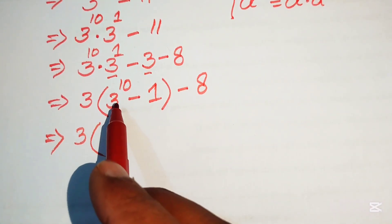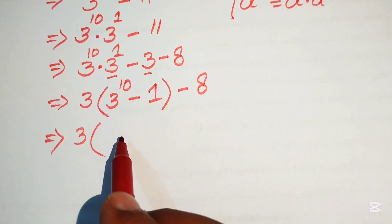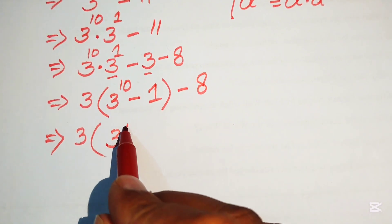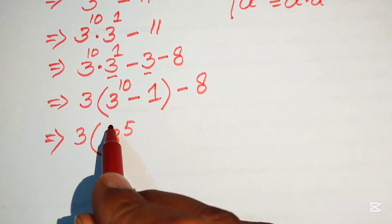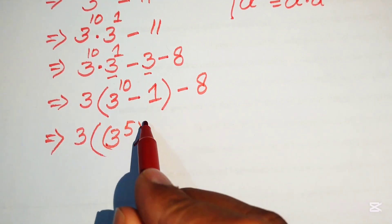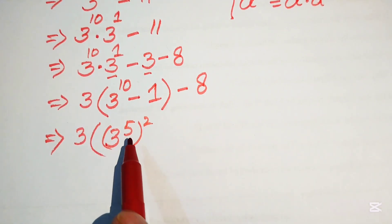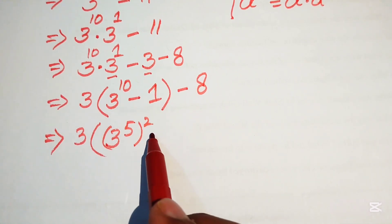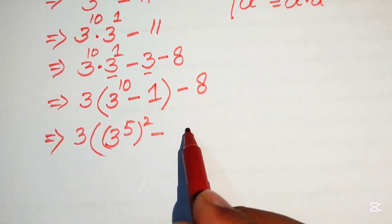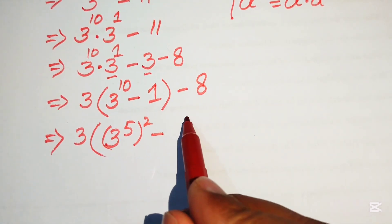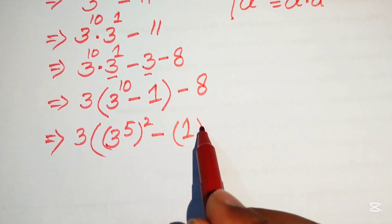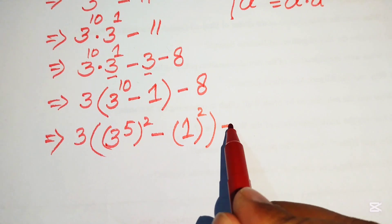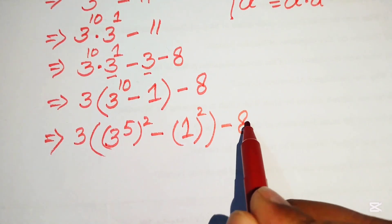In the next step, we rewrite 3 to the power of 10 as the quantity 3 to the power of 5, whole squared — since 5 times 2 equals 10 — and we write 1 as 1 squared, minus 8.